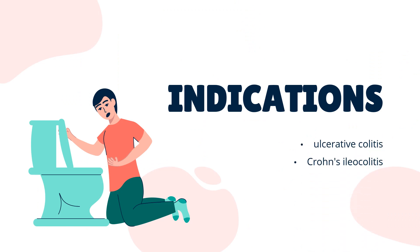What is mesalamine used for? Mesalazine is indicated for the treatment of mildly to moderately active ulcerative colitis in adults and patients 5 years or older. Mesalazine is also indicated for the maintenance of remission of ulcerative colitis in adults and maintenance of remission of Crohn's ileocolitis.